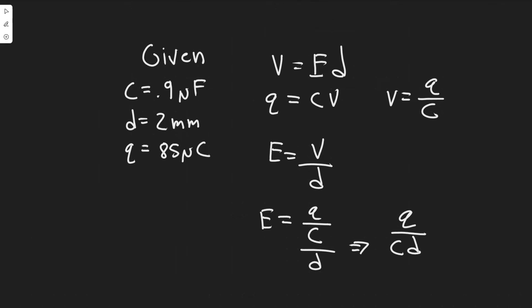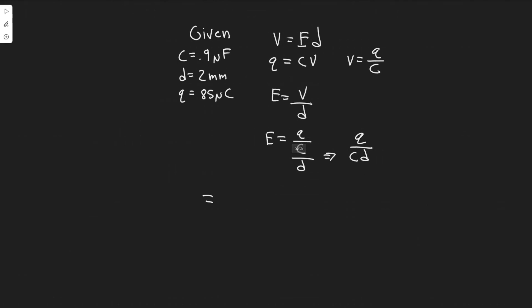So what is Q? We know Q, the charge is 85 micro coulombs. We know the capacitance is 0.9 micro farads, and we know the distance. But make sure we have it in standard units. So if we go ahead and do that, we have the charge on top 85 times 10 to the minus six divided by 2 times 10 to the minus three. That's the distance, right? Just converting it. And then we also have the capacitance 0.9 times 10 to the minus six. And that's in farads because we have micro, right? Micro means times 10 to the minus six.